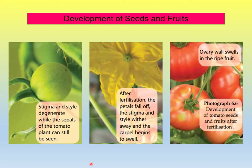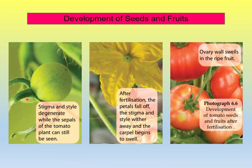Look at these diagrams — they show the developments of tomato seeds and fruits after fertilization. In photograph number one, the stigma and style degenerate while the sepals of the tomato plant can still be seen. The sepals are defensive organs that enclose and protect the development of reproductive structures in the plant.